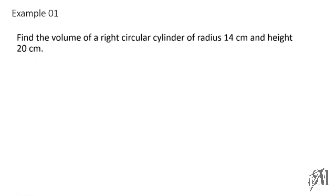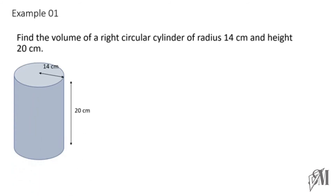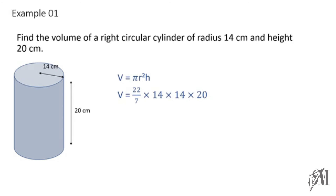The first example: find the volume of a right circular cylinder of radius 14 cm and height 20 cm. Substituting the values, we cancel 7 and 14 (giving 2), and multiplying through gives the answer of 12,320 cubic centimeters. Remember the unit is cubic centimeters since this is a volume.